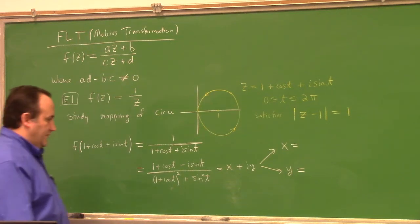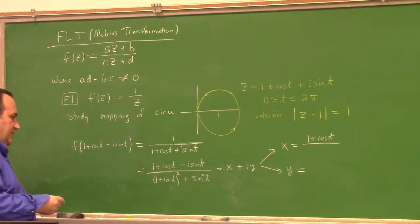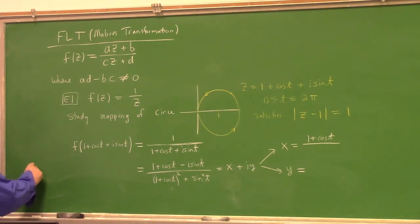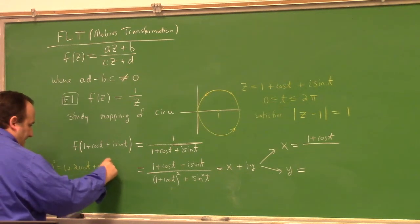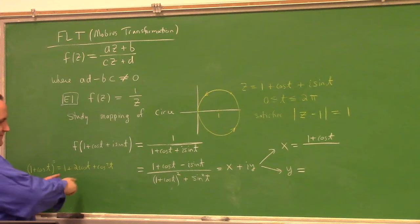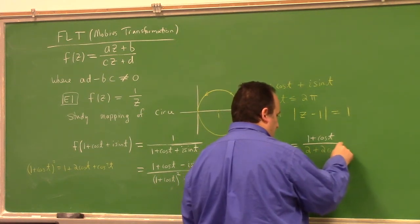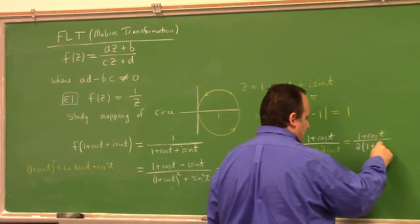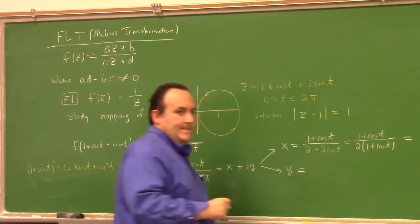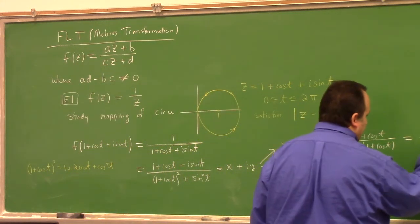Let me simplify the denominator: (1 + cos(t))² plus sin²(t) equals 1 plus 2cos(t) plus cos²(t) plus sin²(t) equals 2 plus 2cos(t). So x equals (1 + cos(t)) over (2 + 2cos(t)), which simplifies to 1 + cos(t) over 2(1 + cos(t)) — that's just one-half.